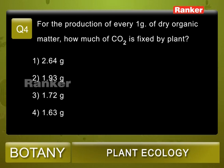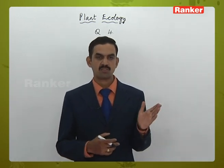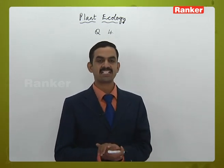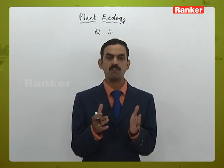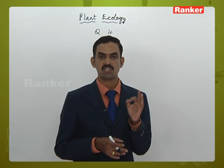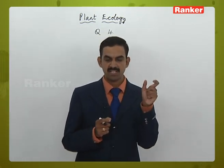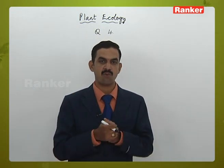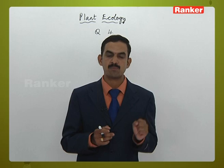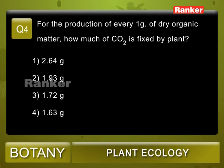Question 4: For the production of every one gram of dry organic matter, how much carbon dioxide is fixed by a plant? Options: 1) 2.64 g, 2) 1.93 g, 3) 1.72 g, 4) 1.63 g. The relation: 264 grams of CO2 produces 180 grams of glucose, which converts to 162 grams of organic matter. So 264 g CO2 produces 162 g organic molecule, meaning 1.63 grams of CO2 is fixed to produce 1 gram of organic molecule. Correct answer: 4.